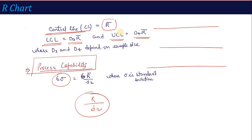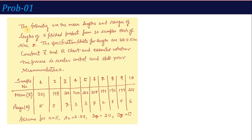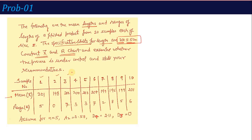Now let's look at a question. The following are the mean lengths and ranges of length of a finished product from 10 samples, each of size 5. The specification limits for length are 200 plus or minus 5 centimeters. We need to construct an x-bar chart and R-chart and examine whether the process is under control. The constants given are: n=5, A2=0.58, D4 and D3 values are provided.